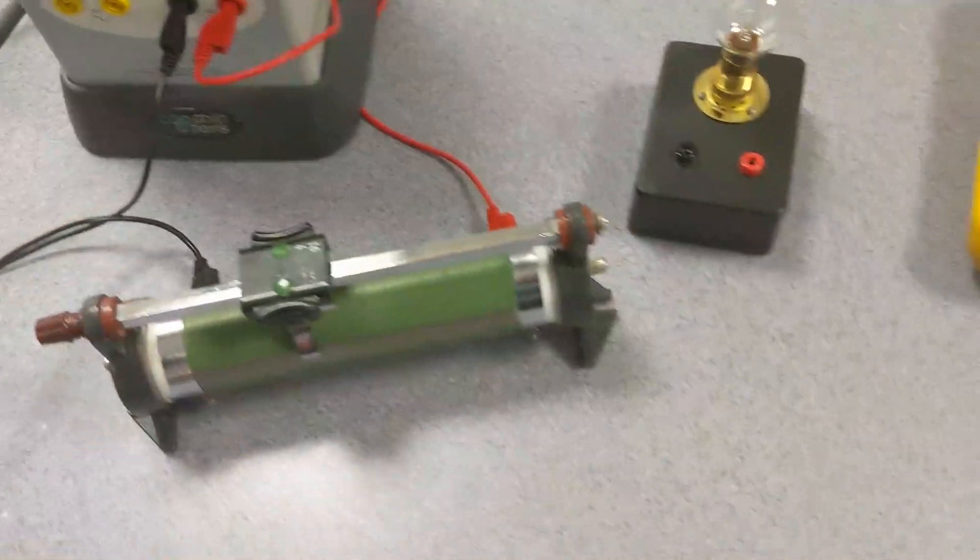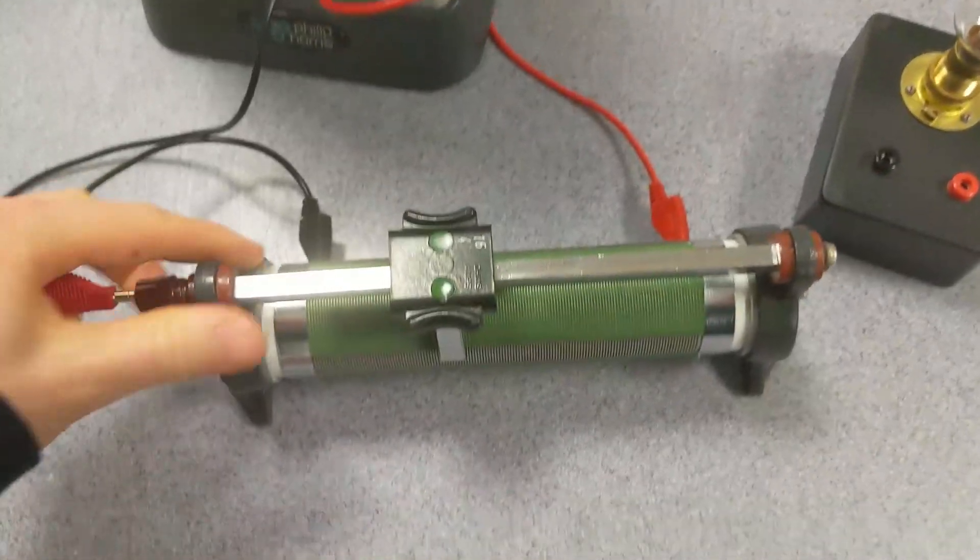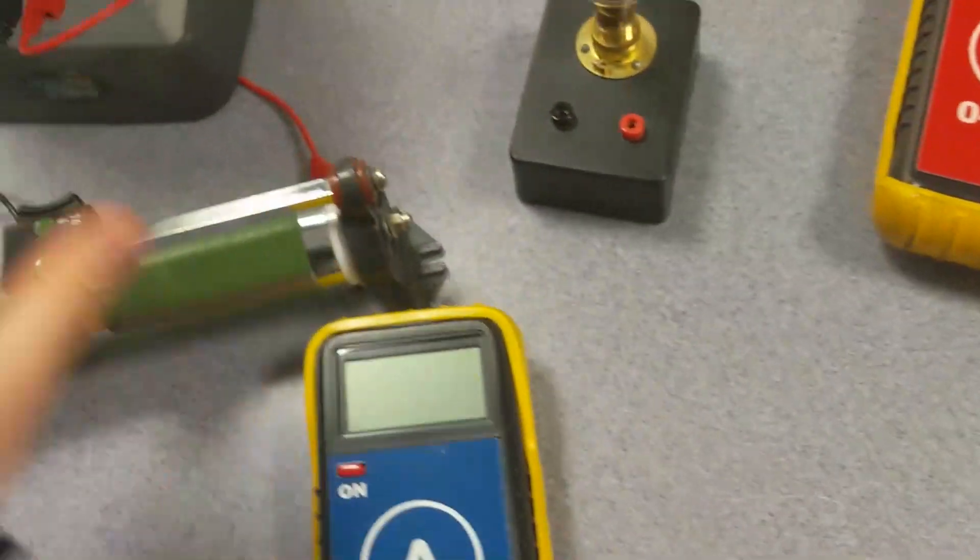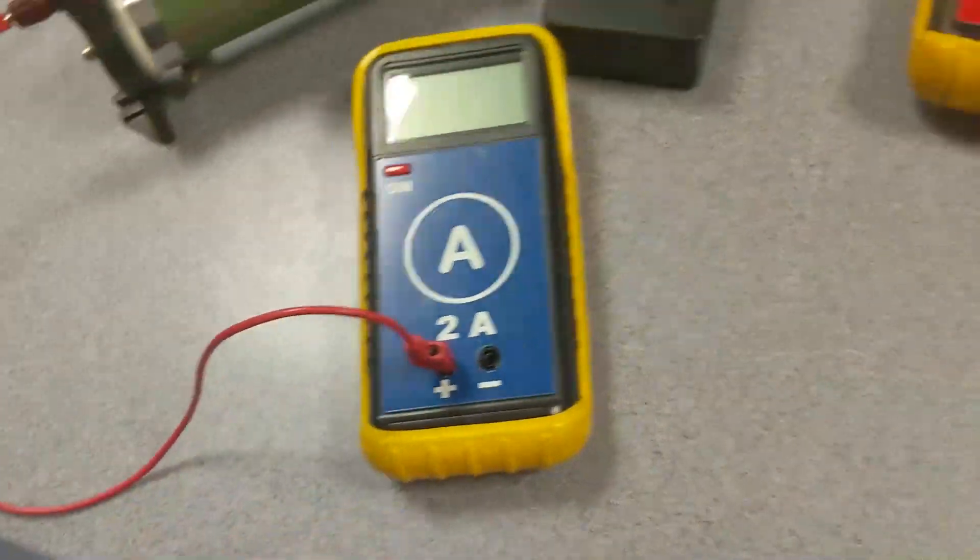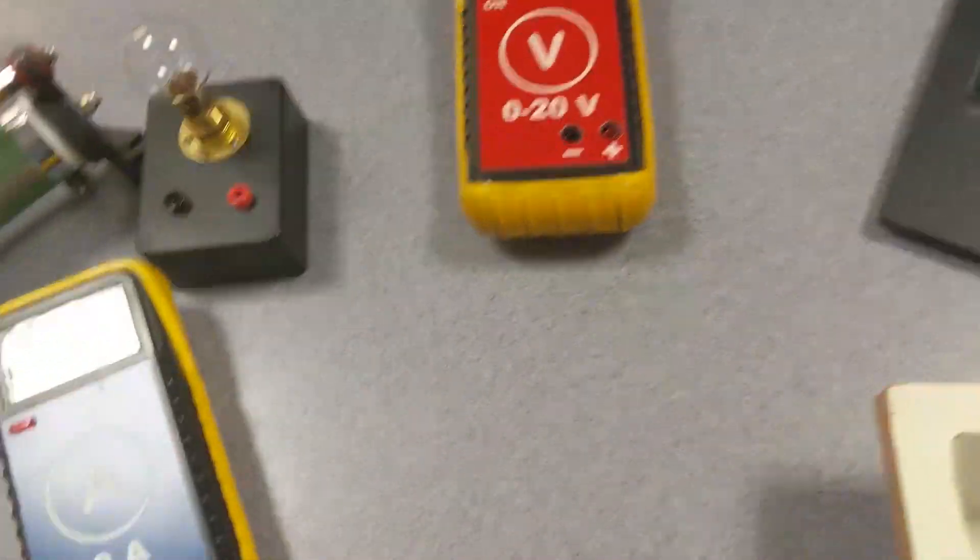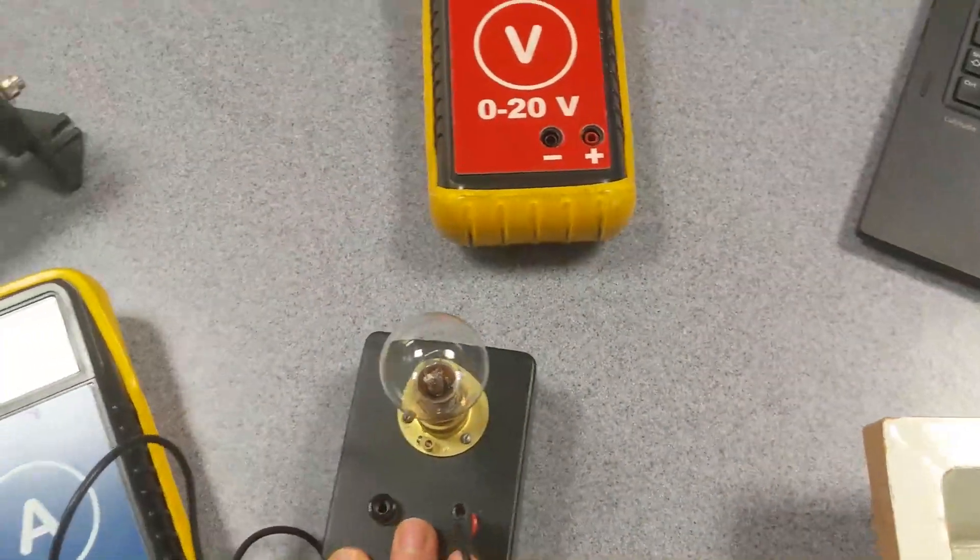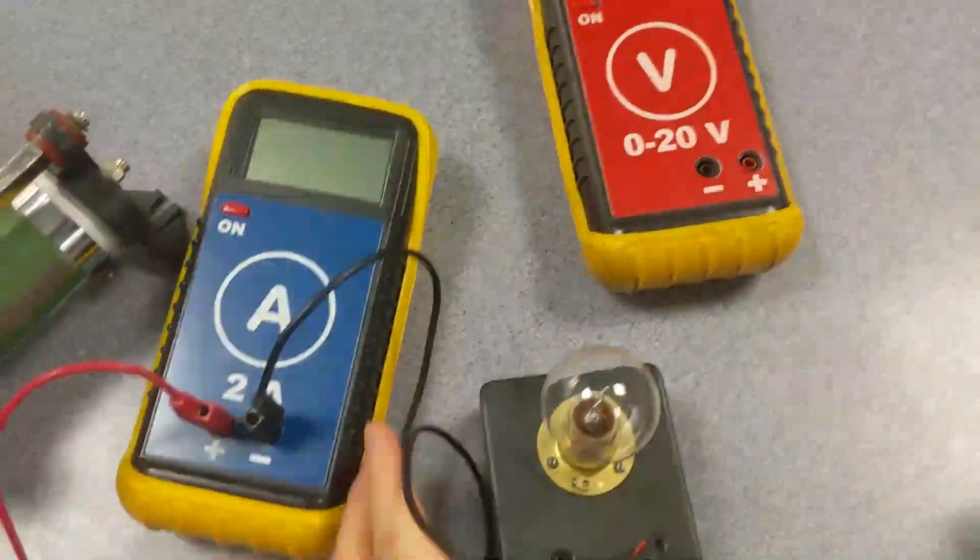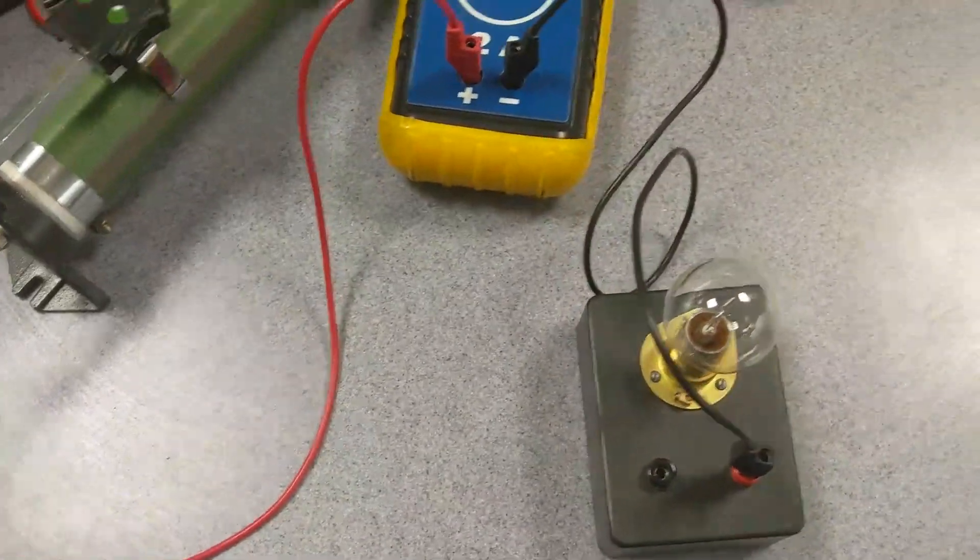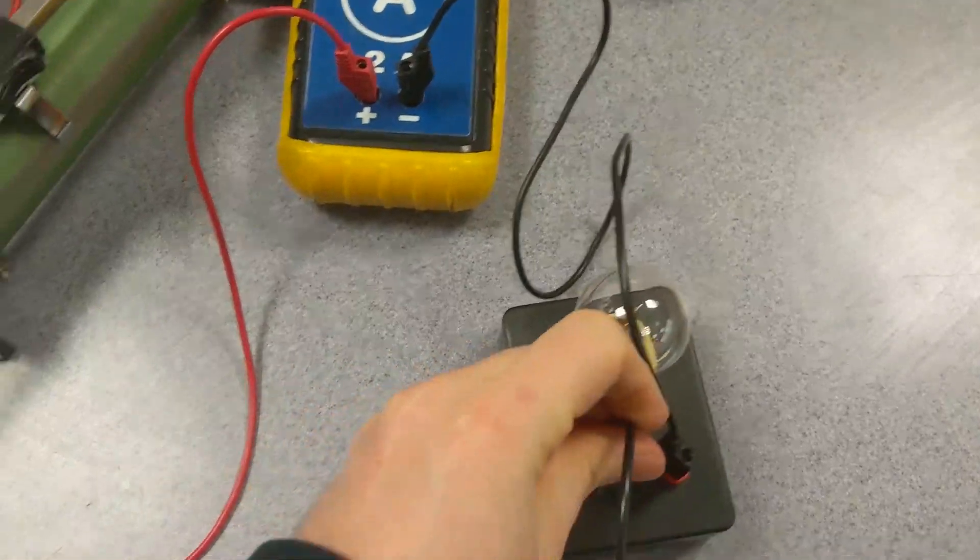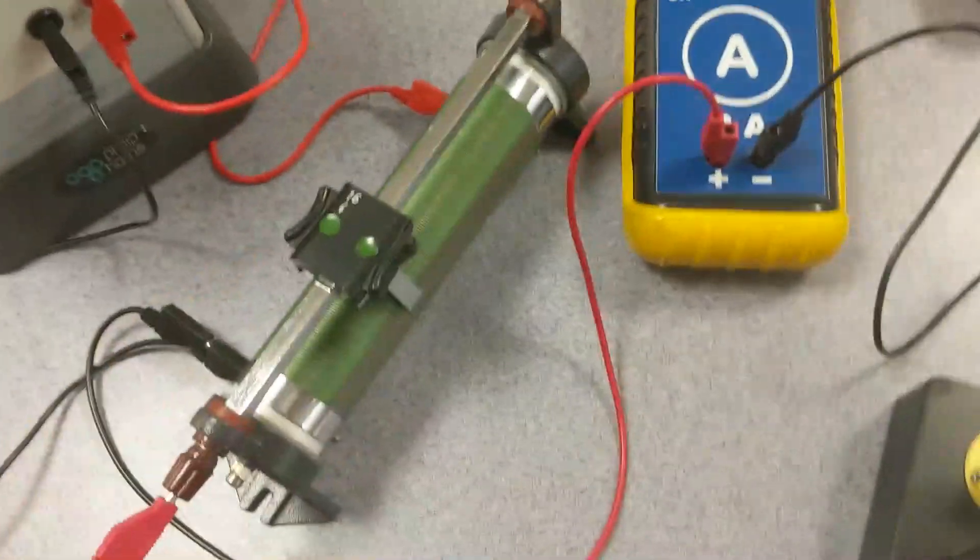So we've got that set up in our power supply. We're going to come from the top here through our ammeter into the bulb. Let's make sure this is laid out nicely.